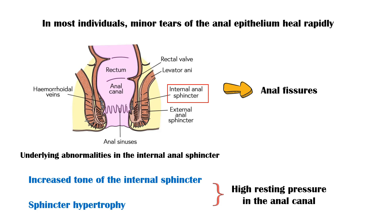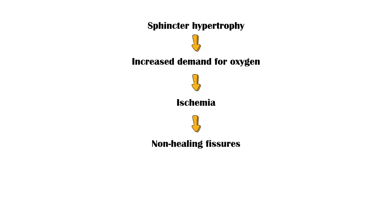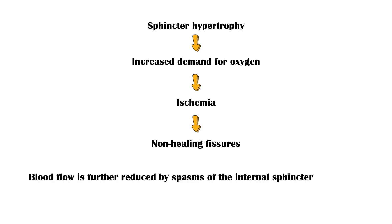In addition, sphincter hypertrophy also causes increased demand of oxygen to the sphincter muscle, leading to ischemia and impaired healing of the fissures. Moreover, blood flow is further reduced by spasms of the internal sphincter during defecation.